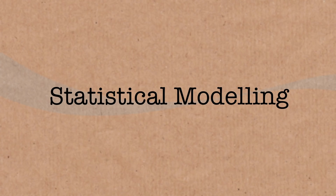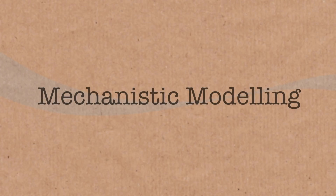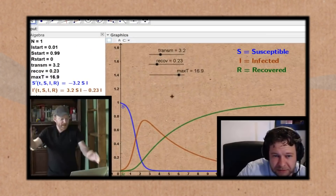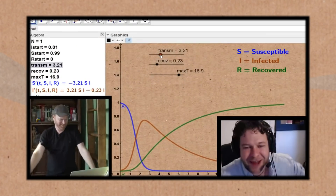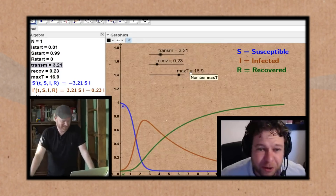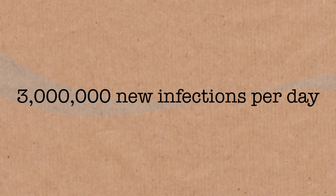There's a group called the IHME — the Institute for Health Metrics and Evaluation — and they've modelled this using both statistical modelling and mechanistic modelling, including the compartment-based SIR models (there's another Numberphile video on those with Ben Sparks). Using a combination of these models, they've estimated that around 3 million people a day are probably newly infected with COVID-19 — quite a large number.